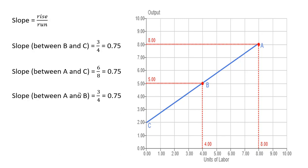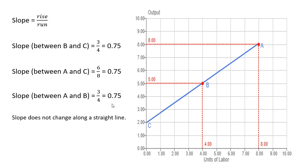For good measure, we can calculate the slope between points A and B. As we go from B to A, there is a 3-unit increase in Y (rise), and the run here is 4 — from X equals 4 to X equals 8, that's a four-unit change in X. So we get the same slope again. Slope does not change along a straight line.